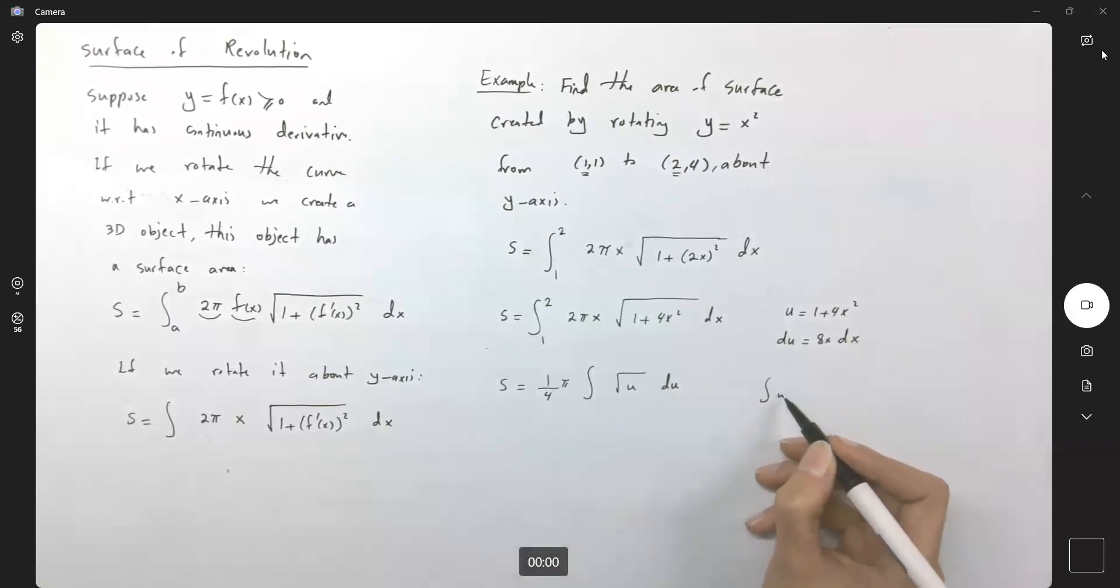Remember that the integral of square root of u du is equal to the integral of u to the one-half du. We are adding 1 to the exponent, it becomes three-halves. So two-thirds u to three-halves.